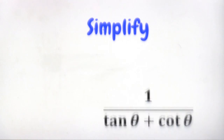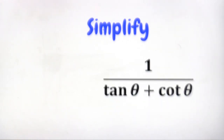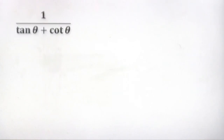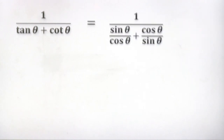Try this example: simplify one over (tangent θ plus cotangent θ). To solve this, replace tangent θ with sin θ over cos θ, and replace cotangent θ with cos θ over sin θ.